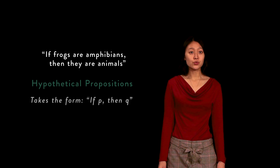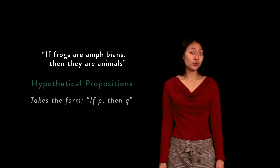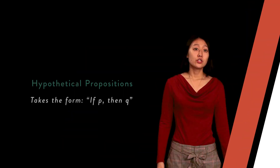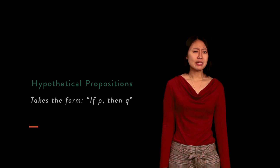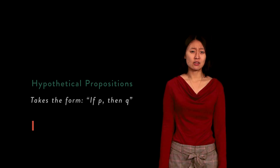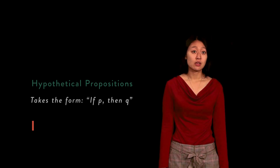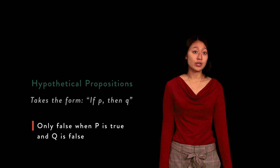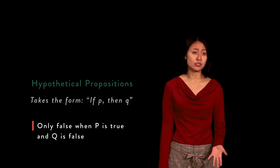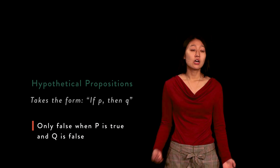If it is true that frogs are amphibians, then it is true that they are also animals. The truth of these propositions is a bit more complicated than the prior two compound forms, as they will only be false in situations where the assumed initial proposition is true and the latter turns out false.